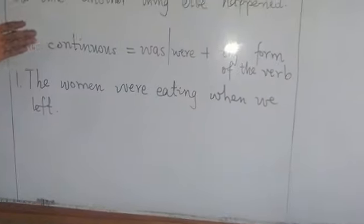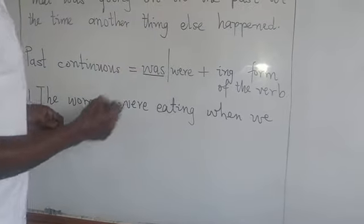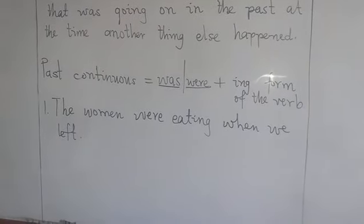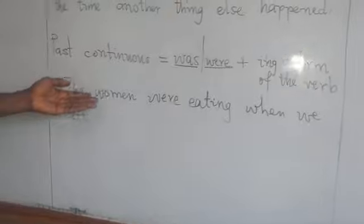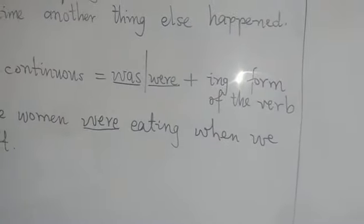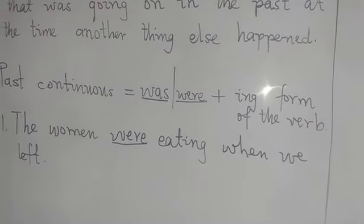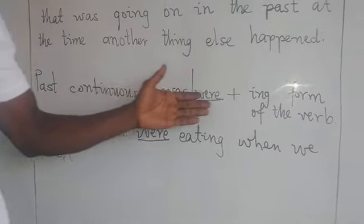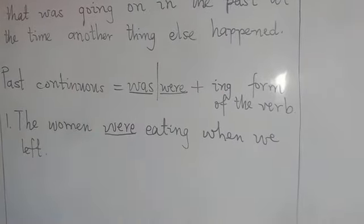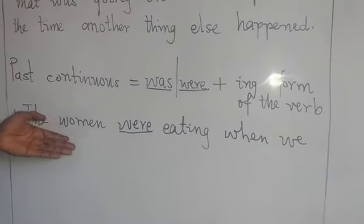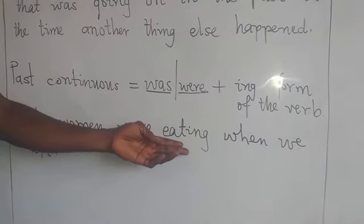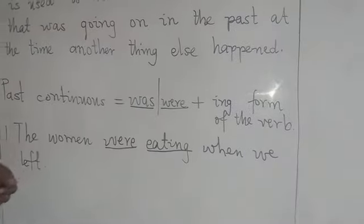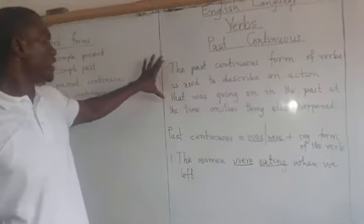Let's quickly consider the sentence in the book: 'The women were eating when we arrived.' As I mentioned earlier in the rule, you must make sure that you use either 'was' or 'were.' Let's come back to the sentence and see if you can find any of them. The women were — and as you are all aware, 'were' and 'was' are usually used to express the past tense forms. And then we also mentioned that the verb should be in the ing form.